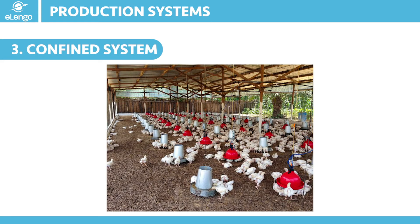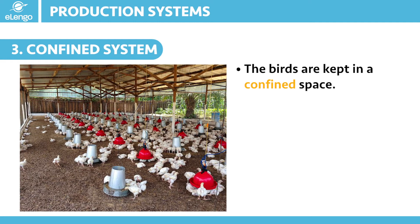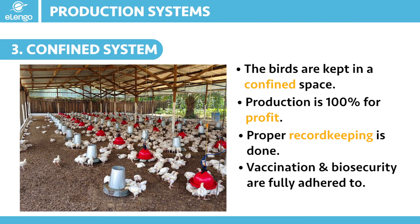What of the confined or intensive production system? In this system, the chickens are kept in a confined poultry house — at no time are they let go outside. They are provided with commercial feeds as production is 100 percent geared towards profit making. Proper record keeping is maintained, birds are vaccinated, and biosecurity has to be adhered to so that you are able to reduce the cost of production due to disease infections.